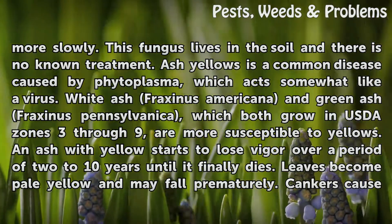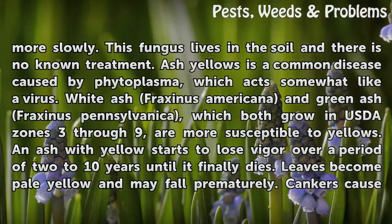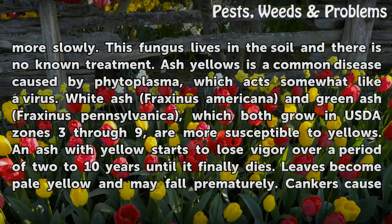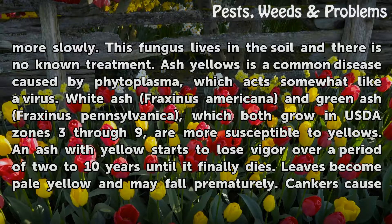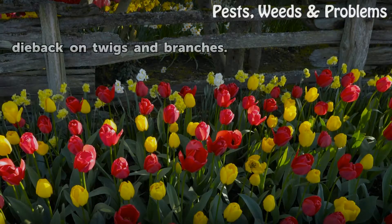Ash yellows is a common disease caused by phytoplasma, which acts somewhat like a virus. White Ash (Fraxinus americana) and Green Ash (Fraxinus pennsylvanica), which both grow in USDA zones 3 through 9, are more susceptible to yellows. An Ash with yellows starts to lose vigor over a period of 2 to 10 years until it finally dies. Leaves become pale yellow and may fall prematurely. Cankers cause dieback on twigs and branches.